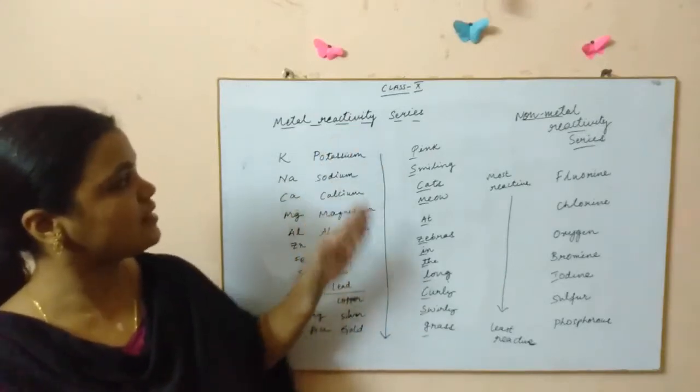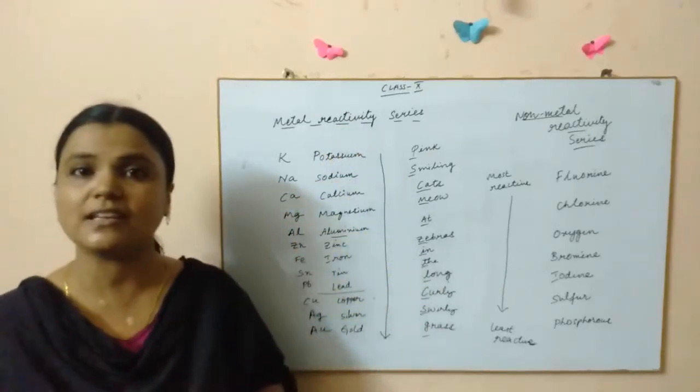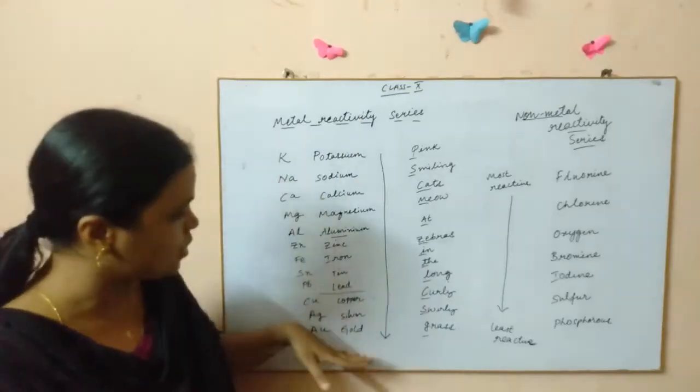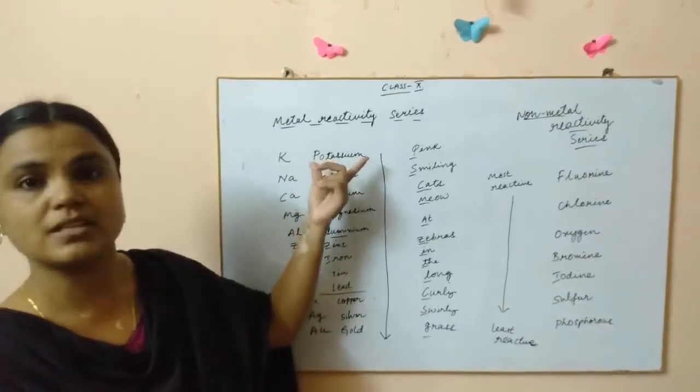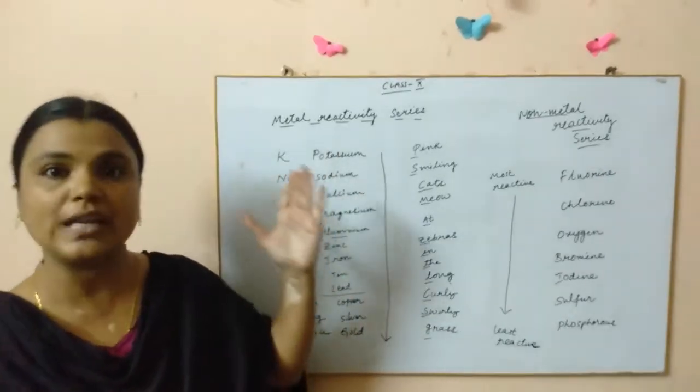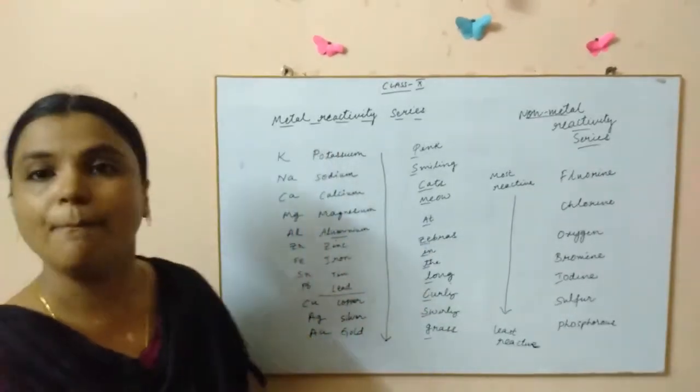You can understand by this, this is the metal reactivity series. If you go from top to bottom, the metal reactivity decreases. That means the metals which are there on the top are more reactive than the ones which are below them.